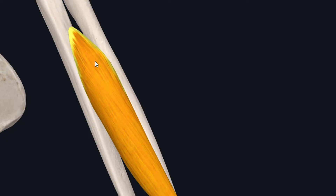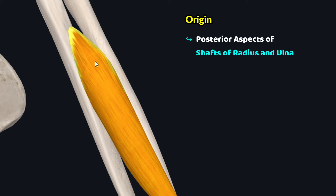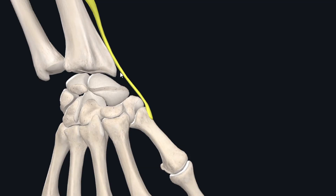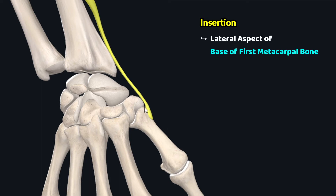This muscle has its origin from the posterior aspects of the shafts of the radius and ulna. The fibers travel inferolaterally over the dorsal aspect of the forearm, and just superior to the wrist these fibers give rise to a muscle tendon which crosses the wrist joint. After crossing the wrist joint, this tendon inserts onto the lateral aspect of the base of the first metacarpal bone, as you can see.